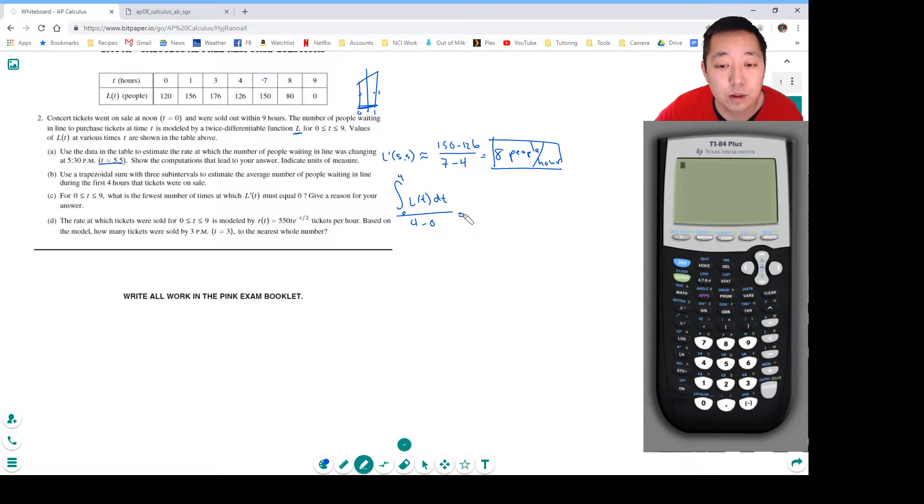So this is approximately equal to 1 times the width interval times 1 half, and I average these two values: 156 plus 120. Plus this interval is 2 times 1 half of 176 plus 156, plus from 3 to 4 it's 1 times 156 plus 126. So these are the 3 sub-intervals, and all of that is going to be divided by 4.